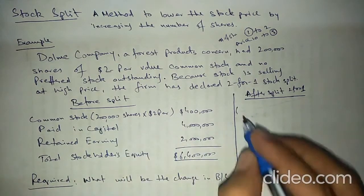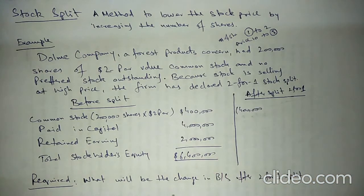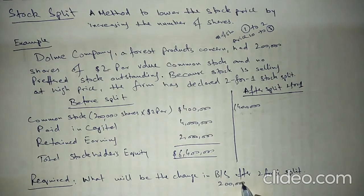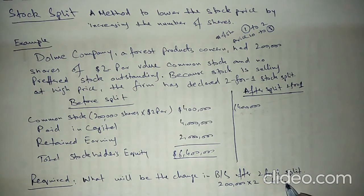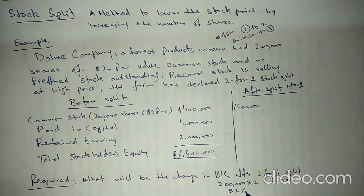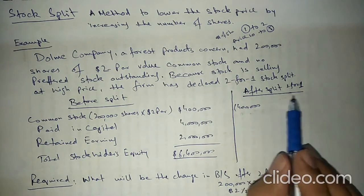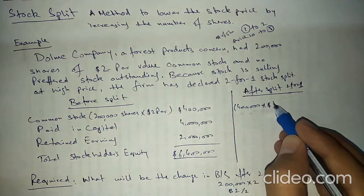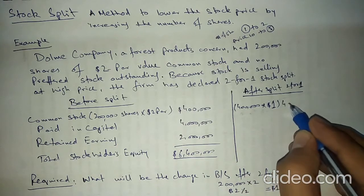After the stock split, the two lakh shares become four lakh shares — calculated by multiplying two lakh by two, since we split one share into two parts. The new par value is calculated by dividing the old par value of dollar two by two, giving a new par value of dollar one. So the new number of shares is four lakh and the new par value is dollar one.